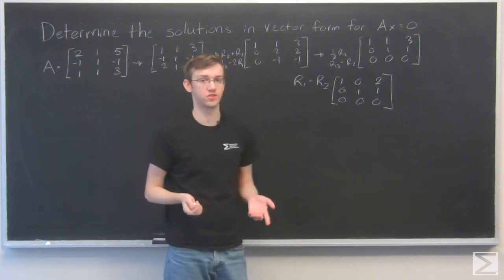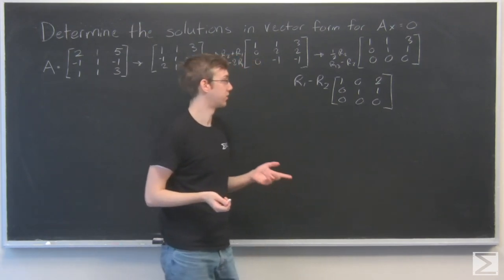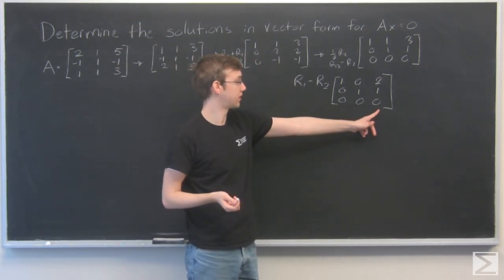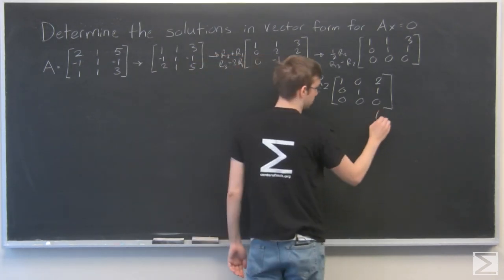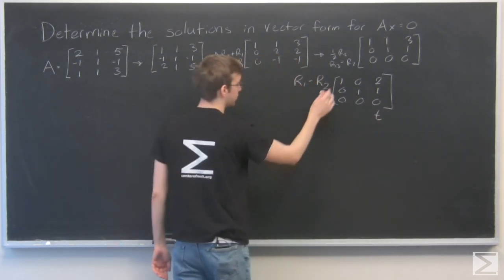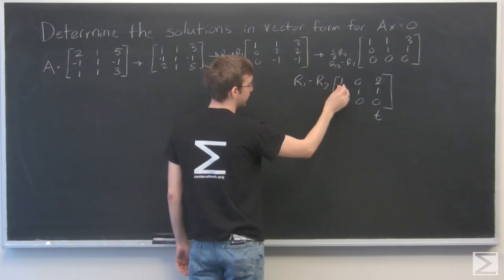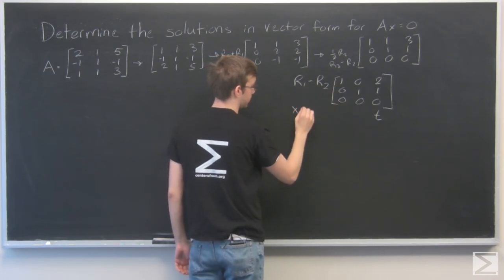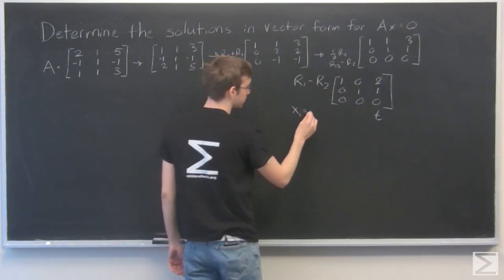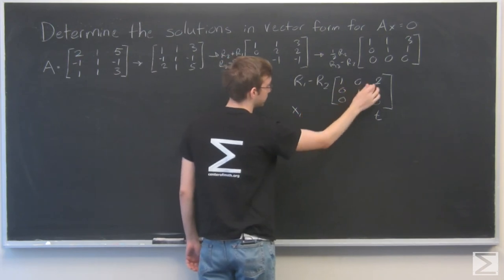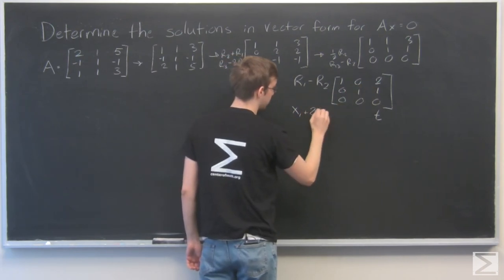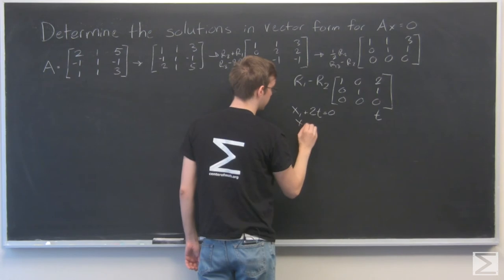OK, now the matrix is in reduced row echelon form. I'm going to assign x3 to be equal to t. From there I can solve my x1 plus 2t equals 0. So x1 equals minus 2t.